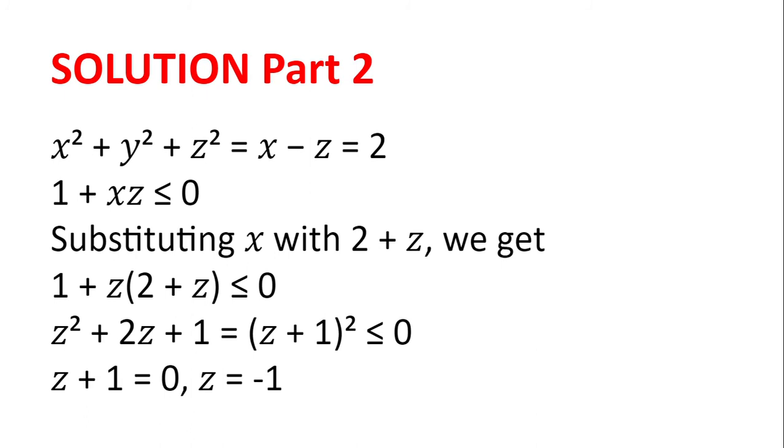But z plus 1 squared is also a square. And we know a square cannot be negative. But we also know that z plus 1 squared cannot be positive. And so, it must be 0, which gives us z plus 1 is equal to 0. And so, z is minus 1.